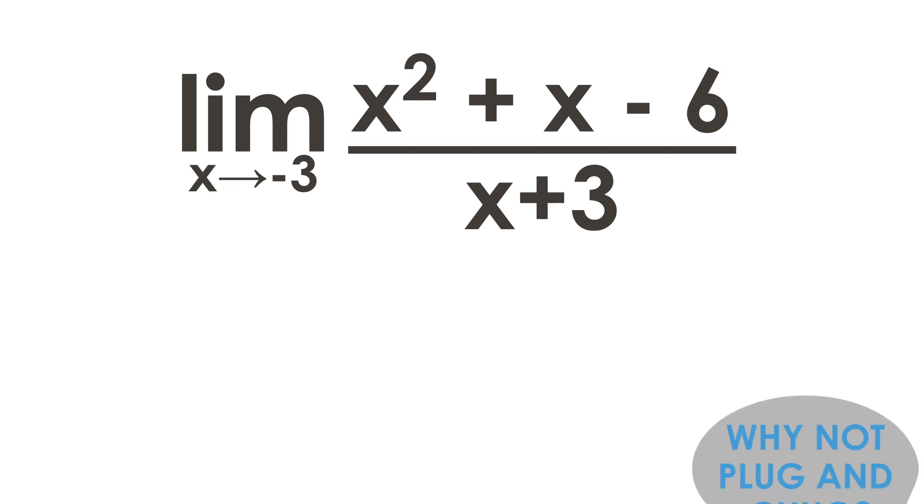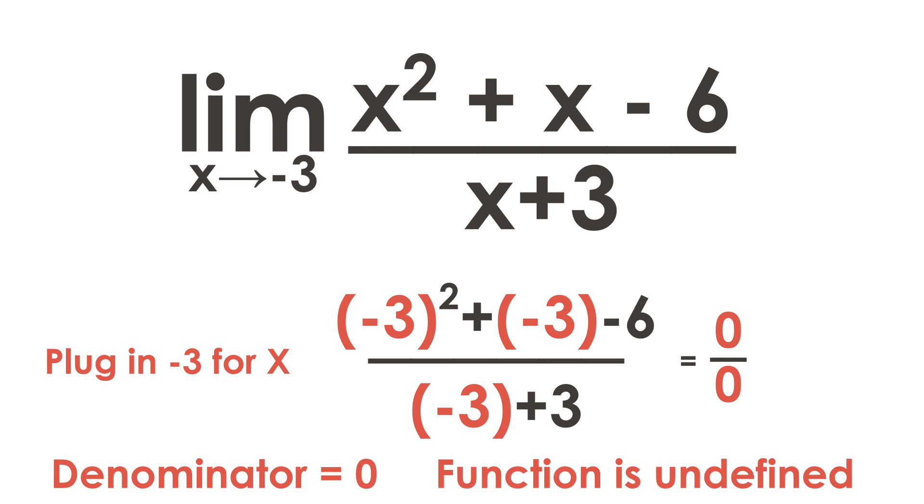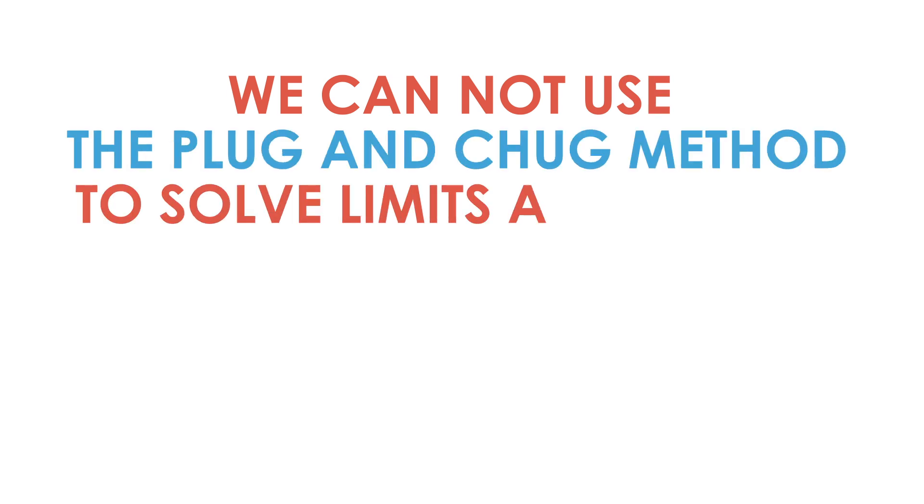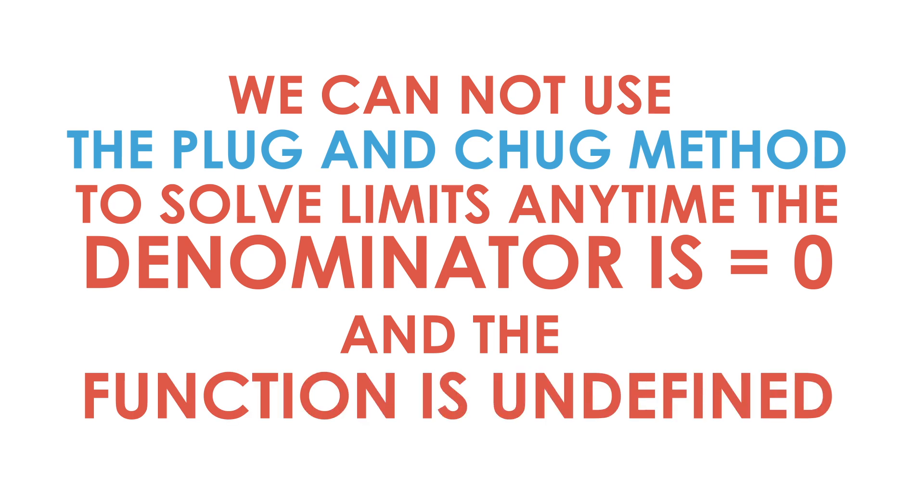So first I want to talk about why we cannot use the plug and chug method to solve this particular limit. Notice if we plug in negative 3 for x, it will make the denominator equal to 0 and the function will be undefined. We cannot use the plug and chug method to solve limits any time the denominator is equal to 0 and the function is undefined.